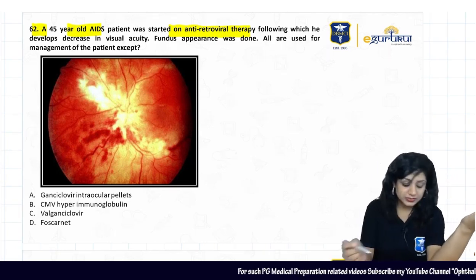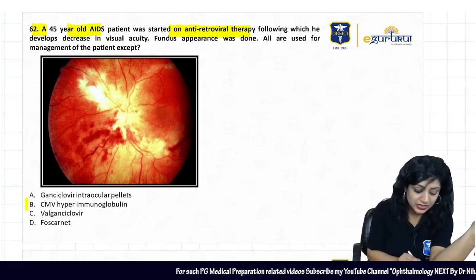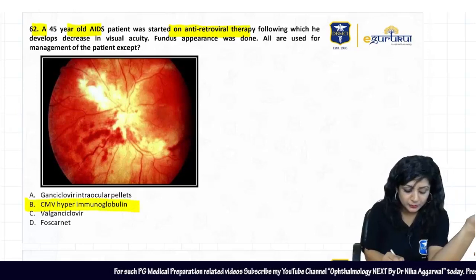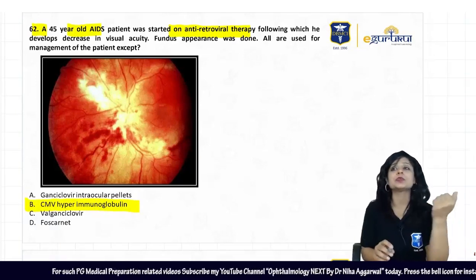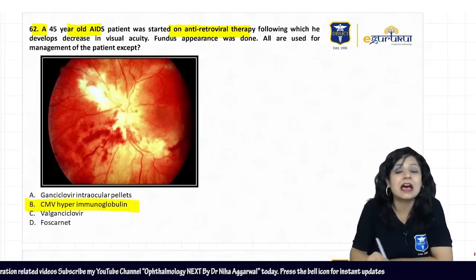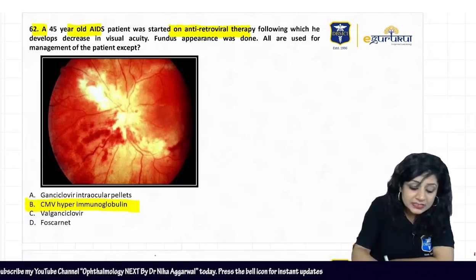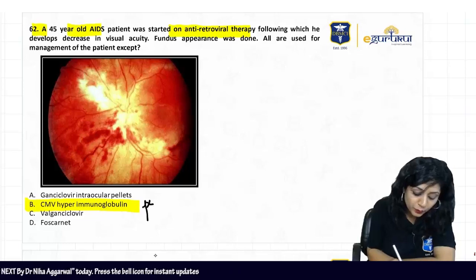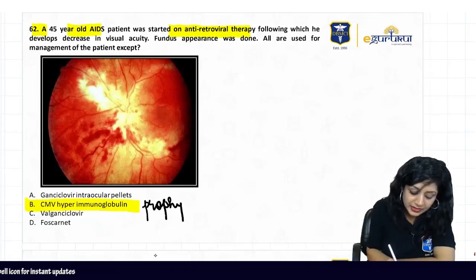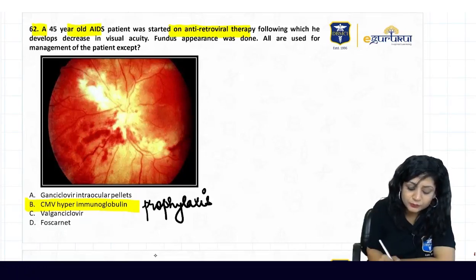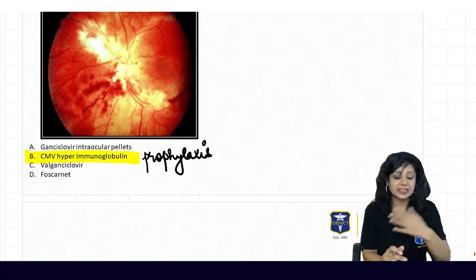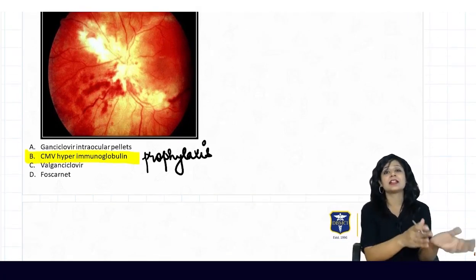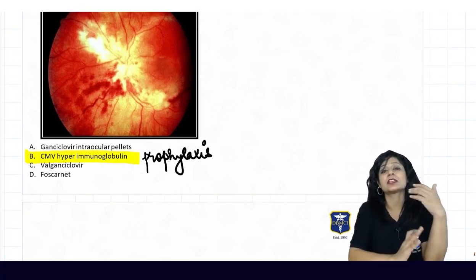The answer to this question is CMV hyperimmunoglobulin. We know that immunoglobulins are basically used for prophylaxis — they are used for prophylaxis and not for management.